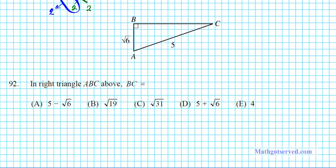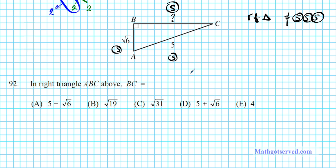Let's take a look at problem 92. It says in right triangle ABC, find the length of BC. We're given two sides and asked to find the third — that's SSS with a right triangle, so we use the Pythagorean theorem: C squared equals A squared plus B squared. The most common mistake is not labeling A, B, and C correctly — C is always the hypotenuse.